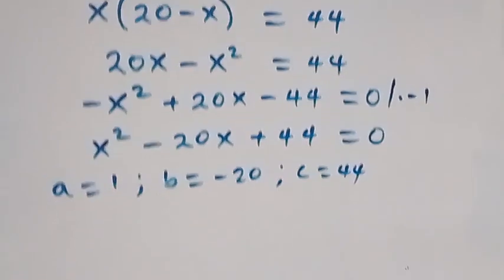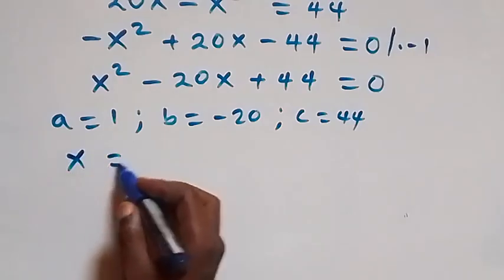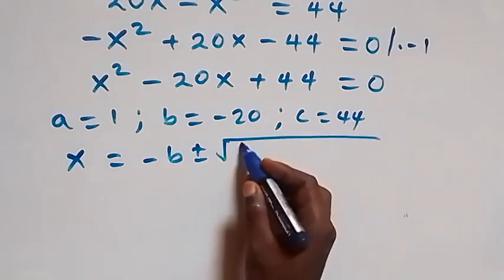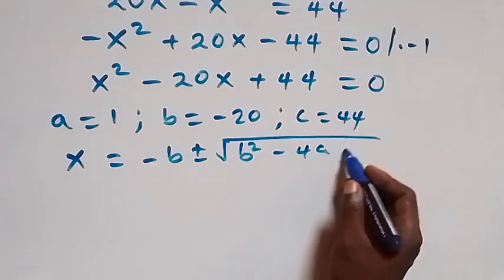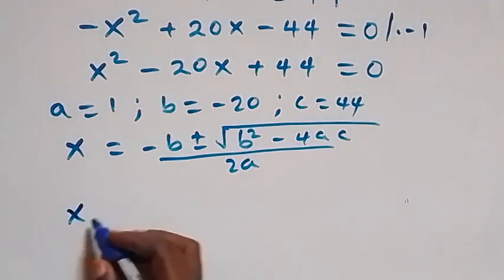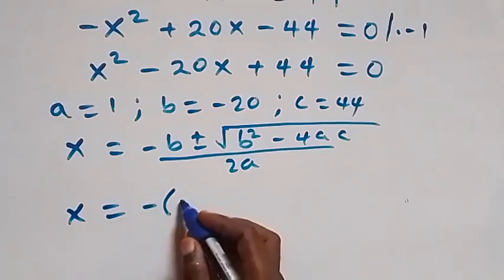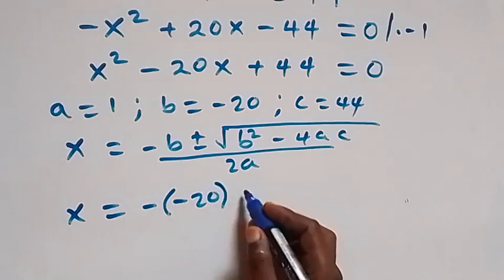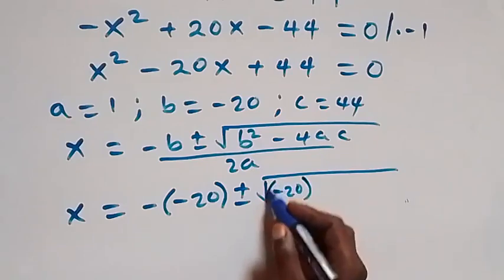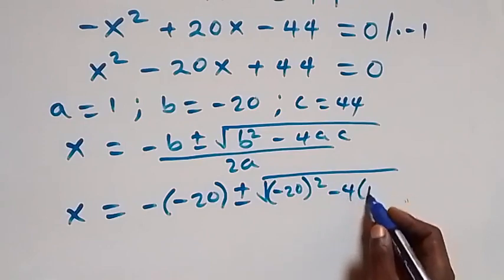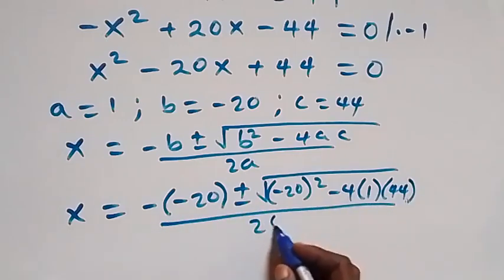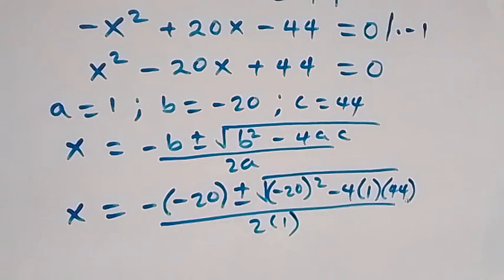From the quadratic formula, x equals to minus b plus or minus square root of b squared minus 4ac, all over 2a. Substituting, we have x equals to minus of minus 20, plus or minus square root of minus 20 squared minus 4 times 1 times 44, over 2 times 1.